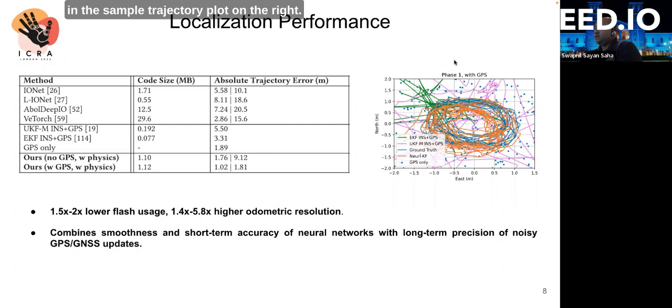As seen in the sample trajectory plot on the right, the GPS alone is very noisy, whereas conventional INS drifts due to IMU angular random walk and bias instability. However, our filter learns to combine the smoothness and short-term accuracy of neural networks with long-term precision of noisy GPS during GNSS outages. Furthermore, the filter can even constrain the positional error down to 2.75 meters with 20 minutes of GPS outage.